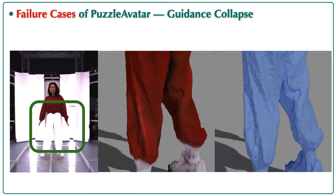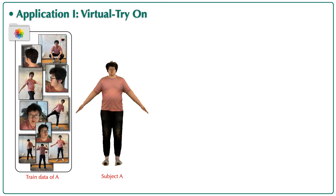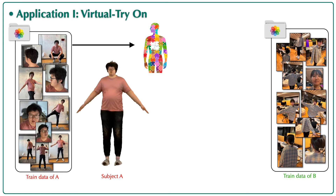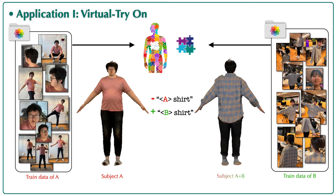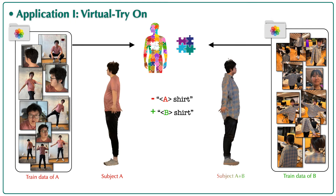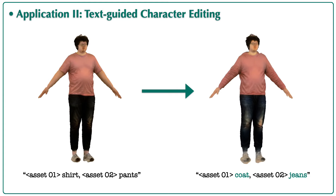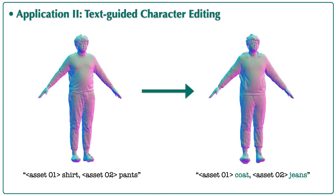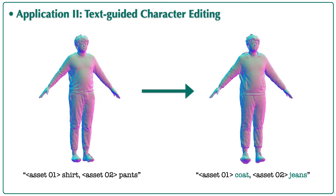Here we show some applications of Puzzle Avatar. Since Puzzle Avatar is a compositional method, it lets us easily interchange tokens to customize avatars and perform virtual try-on with a consistent avatar identity. With Puzzle Avatar, we can also perform text-guided editing — by simply altering the garment category in the text prompt, we can redress the person with another type of garment.